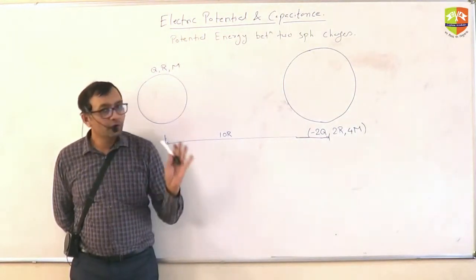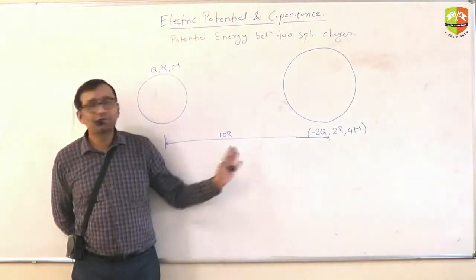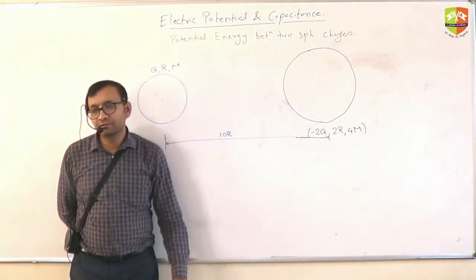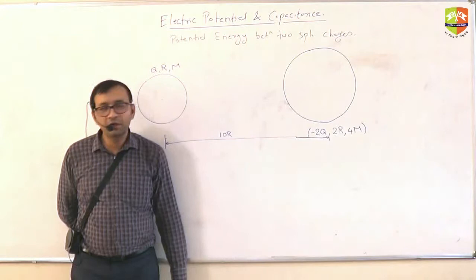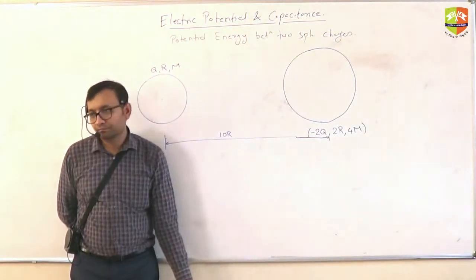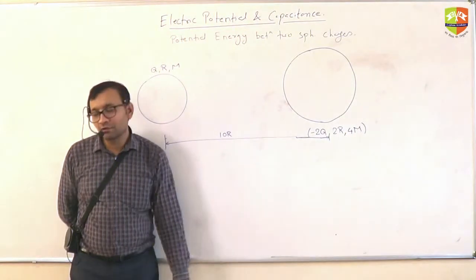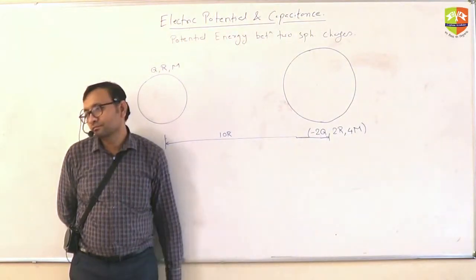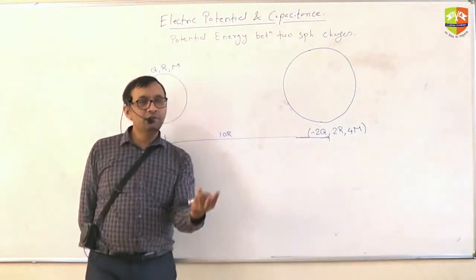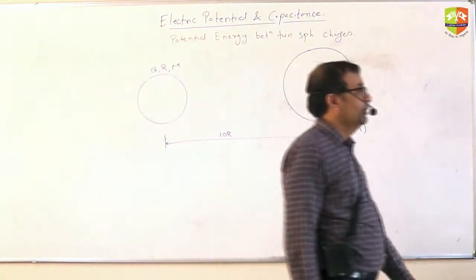When they are about to collide, that is your second point and this is your first point. Just write down the energy equation. Find out U1, U2, K1, K2. W is anyway zero, and K1 is also zero. Just three things you have to find out: U2, K2, and U1.